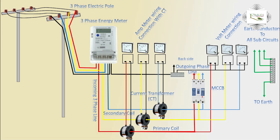CT to ammeter shows the ampere. Three-phase line: ammeter shows ampere reading and voltmeter shows volt reading. Thank you.